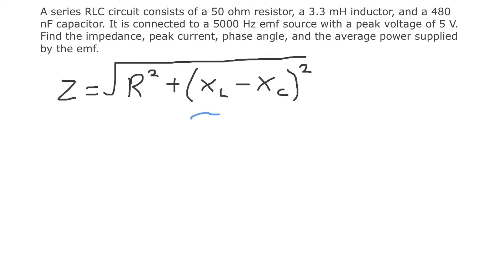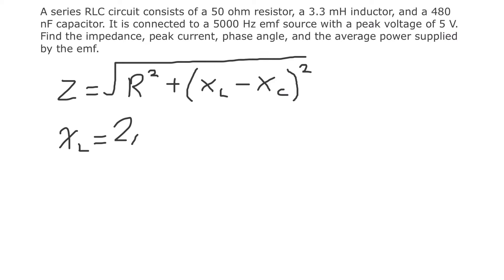We know the resistance is 50 ohms. Now we need XL and XC. The inductive reactance XL — think of it as the resistance of the inductor — is given by XL equals 2π times frequency times the inductance L. With a frequency of 5000 hertz, we can calculate this first and then move on to the capacitive reactance.